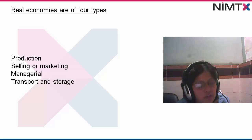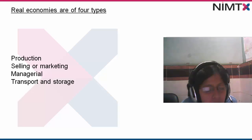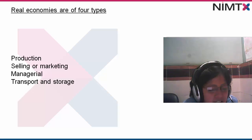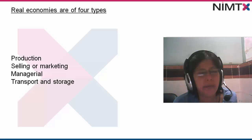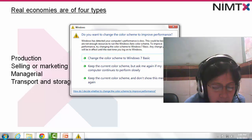Next we have managerial economics, which are of two types: specialization of management and mechanization of managerial functions. In a small firm, a single person who may be the owner also makes all managerial decisions — covering production, warehouse decisions, and any other decisions. This division of managerial work increases the experience of the manager.